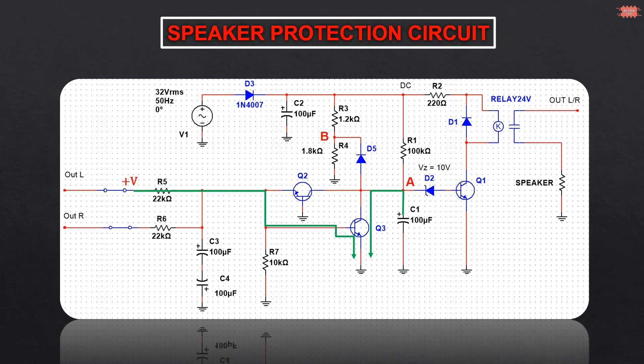And vice versa, if it is a DC negative voltage, then transistor Q2 will be biased. This leads to voltage C1 being discharged through the collector-emitter junction of transistor Q2. So transistor Q1 turns off and the relay switches to isolate the speaker.